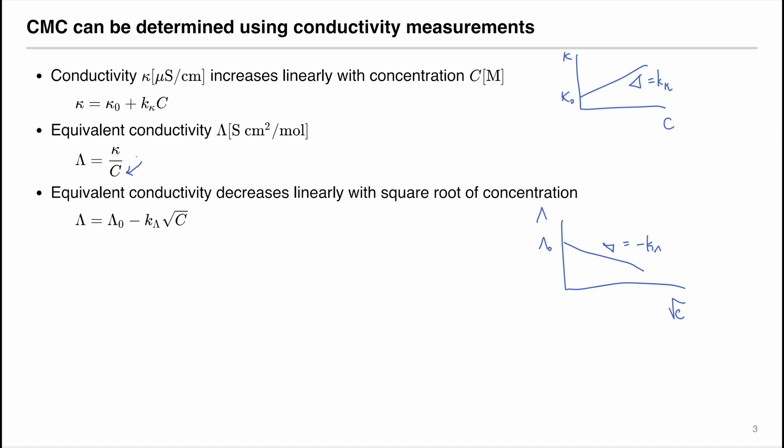In the experiment, we would expect that the conductivity would change with respect to concentration, especially at the critical micelle concentration. For example, at a higher regime, at a more concentrated solution, we would have higher conductivity, like the stock solution. And after we dilute it, it will have decreased conductivity, and then it will almost decrease linearly according to the rule that we have discussed.